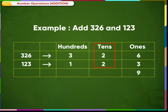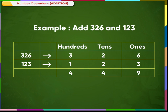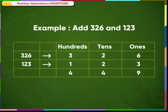Adding the tens column: two tens plus two tens is equal to four tens. Now, adding the hundreds column: three hundreds plus one hundred is equal to four hundreds. So, the sum is four hundreds, four tens and nine ones, which is equal to 449.